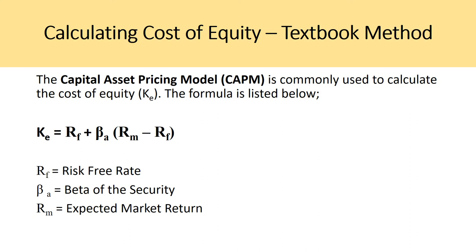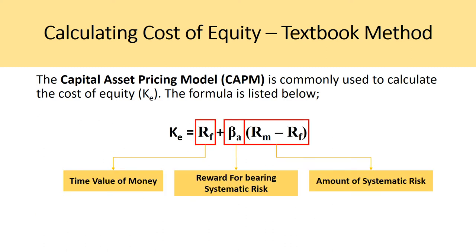The traditional formula to calculate the cost of equity is the Capital Asset Pricing Model (CAPM): the risk-free rate plus beta times the market risk premium, which is the expected market return minus the risk-free rate. This video will argue that this formula is incomplete. At beginning and intermediate levels it is sufficient, but investment bankers and equity research analysts go beyond this, as there are several assumptions excluded from this formula.